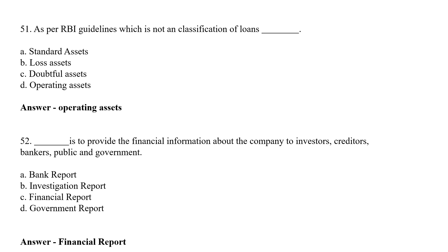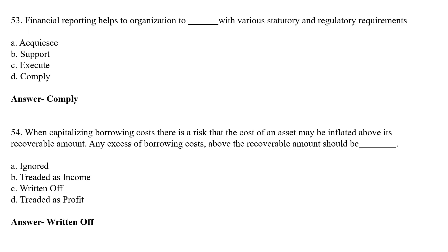Financial reporting helps an organization to dash with various statutory and regulatory requirements. Option A: Acquiesce, Option B: Support, Option C: Execute, Option D: Comply. The correct answer is Option D — Comply. Financial reporting helps an organization to comply with various statutory and regulatory requirements.